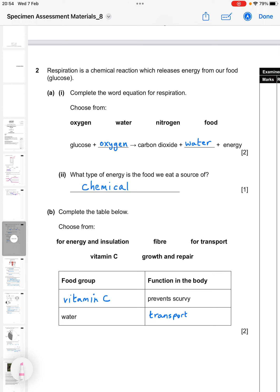Question 2, respiration is a chemical reaction which releases energy from our food, specifically glucose there in brackets. Complete the word equation for respiration. Choose from oxygen, water, nitrogen, or food. So glucose plus oxygen gives carbon dioxide plus water. They have to be in the correct spaces there, so two marks for both of those. What type of energy is the food we eat a source of? So of course that is chemical energy. So one mark for that.